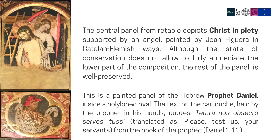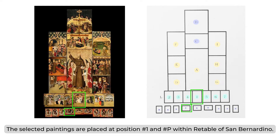The second is the painted panel of the Hebrew prophet Daniel inside a pulley-lobbed oval. The text on the cartouche, held by the prophet in his hands, quotes: 'Demtenos ob secros servos tuos,' translated as 'Please test us, your servants,' from the Book of the Prophet.